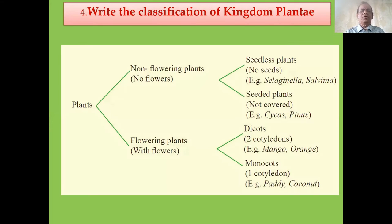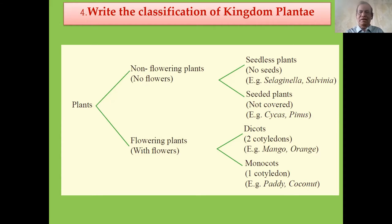Write the classification of kingdom Plantae. Plants are mainly divided into two groups: non-flowering plants and flowering plants. Non-flowering plants have two categories: seedless plants — examples include Selaginella, Salvinia, Dryarea — and seeded plants such as Cypress and Pinus, which are non-flowering. Flowering plants, the angiosperms, are also two types.